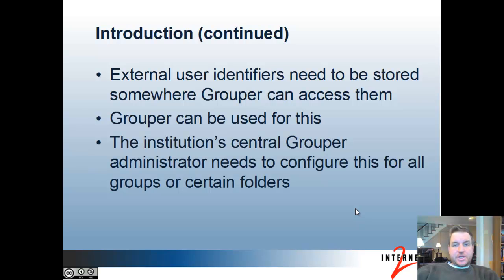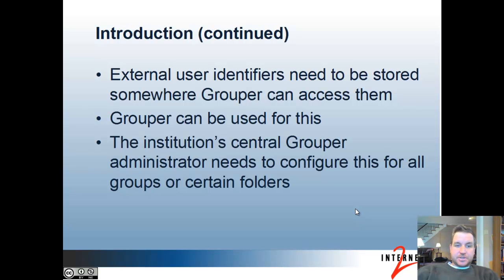External user identifiers like johnsmith@google.com or johnsmith@whatever-your-institution.edu need to be stored somewhere so that Grouper can access them. Grouper can do this for you if your identity management system does not. The institution's central Grouper administrator needs to configure this either for all groups, or for certain groups or folders, to have external users.